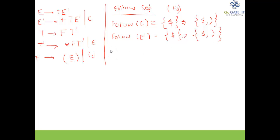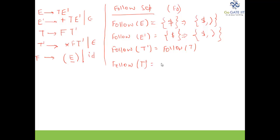Now we calculate follow of T-dash. The first occurrence of T-dash is in E's production, so follow of T-dash is follow of T. Follow of T is first of E-dash. First of E-dash contains plus and epsilon. Since it contains epsilon, following the last rule, follow of T equals first of E-dash minus epsilon, unioned with follow of E. So follow of T is {plus, dollar, ')'}.